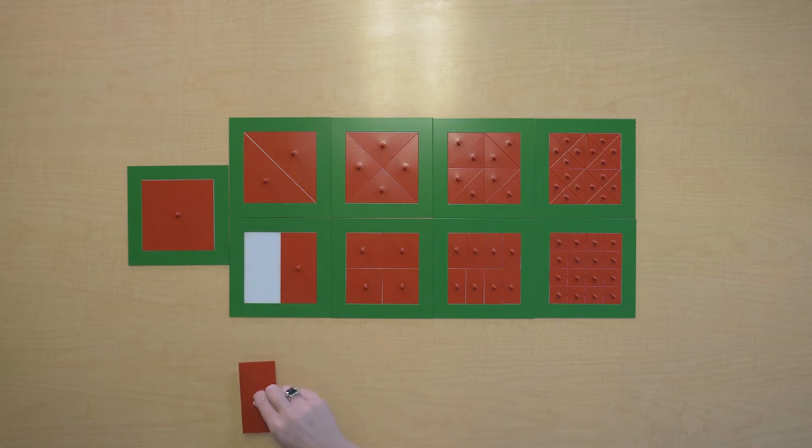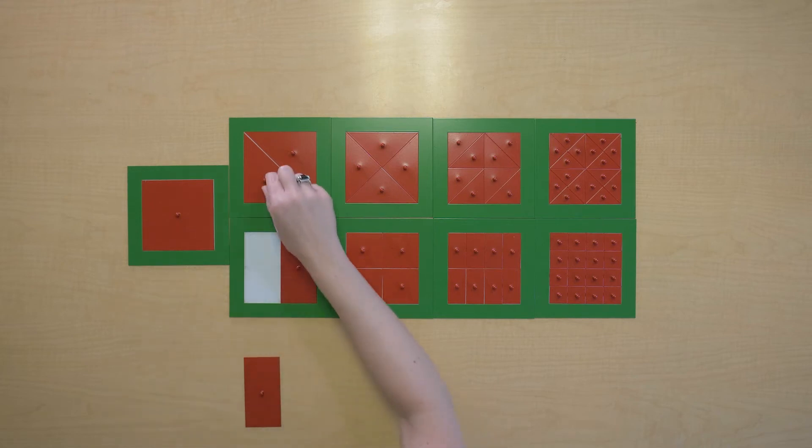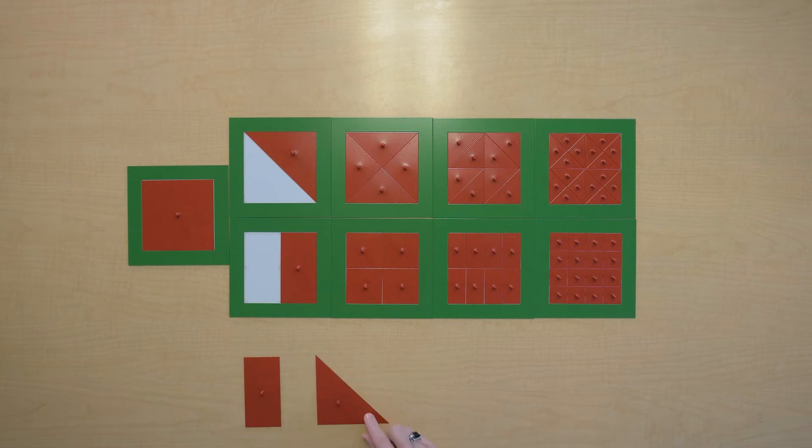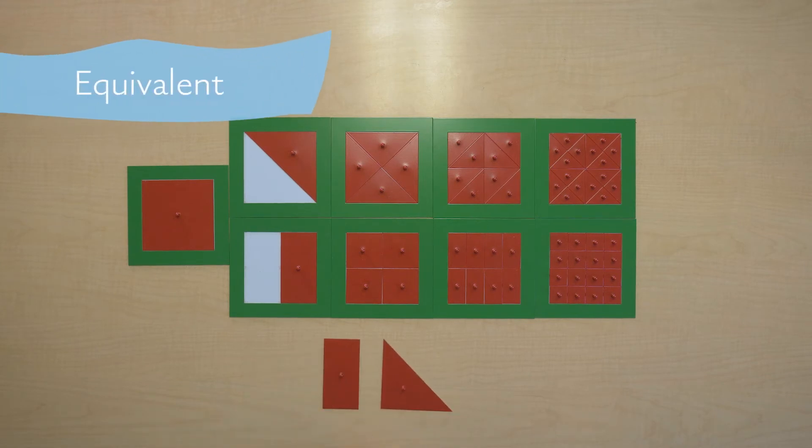So this one piece takes up half of the whole. And this piece also takes up half of the whole. So these two pieces are equivalent. They take up the same amount of space.